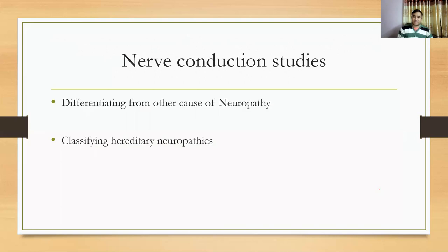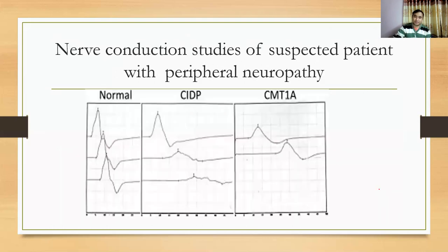What is the role of nerve conduction studies when evaluating Charcot-Marie-Tooth disease? If we perform nerve conduction studies properly, we can differentiate CMT cases from other causes of neuropathy — classically CIDP — and also classify the hereditary neuropathies. In a patient with CIDP, you can see increased distal latency and decreased amplitude.